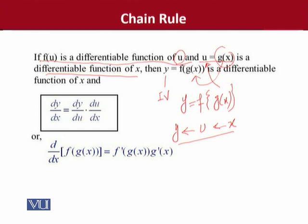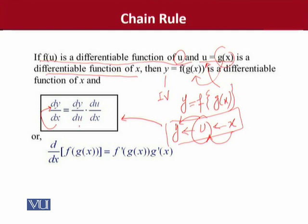अब बात यह है कि how we can deal with such a function when it comes to its differentiation. यह rule हमारे सामने mention हो गया — dx basically x के अंदर change है जो y को कैसे effect कर सकती है। यह एक direct relationship नजर आ रहा है, but actually ऐसा नहीं है, because if we resort to this flowchart, we can see that x is not directly affecting y — x is affecting y indirectly via u. So it is an indirect relationship, और इसके लिए जो formulation है, on the right hand side it says dy over du into du over dx. अब यह जो आप देख रहे हैं, अगर मैं du और du को काट दूँ तो यह basically left hand side के बराबर आ जाएगा।